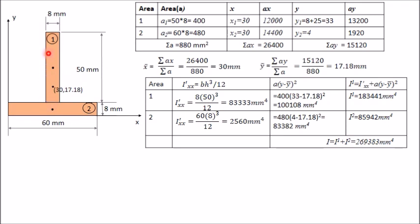For area two: A₂ = 480, y₂ = 4 mm, ȳ = 17.18 mm. Calculate A₂(y₂ − ȳ)² and add to Ī₂ to get the moment of inertia of area two. The total moment of inertia of the composite figure about the centroidal x-axis is the sum of these two values. This is the final answer for Ix.